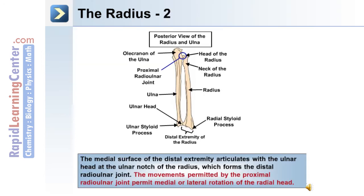The medial surface of the distal extremity articulates with the ulnar head at the ulnar notch of the radius, and this forms the distal radial ulnar joint. The movements permitted by the proximal radial ulnar joint permit medial or lateral rotation of the radial head.